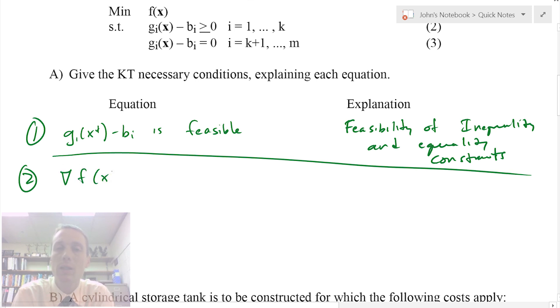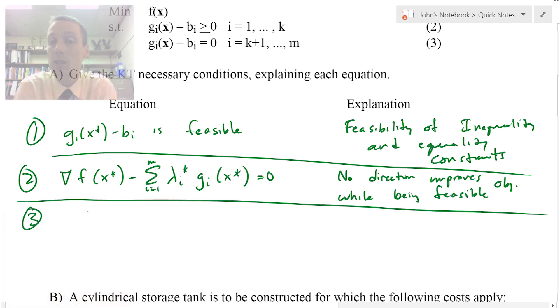The next one is that the gradient of the objective function at the optimal solution minus the Lagrange multiplier times the gradient of the equality or inequality constraints at the final solution has to equal zero. This is no direction improves the objective while being feasible.